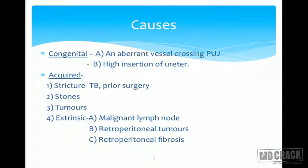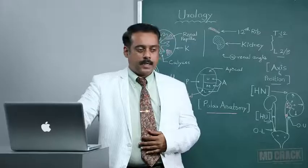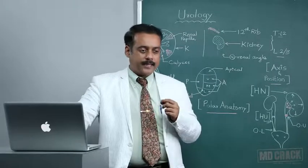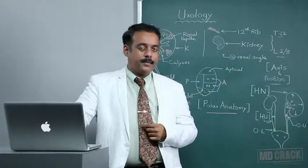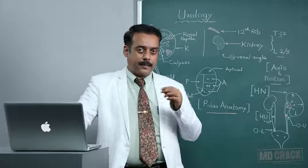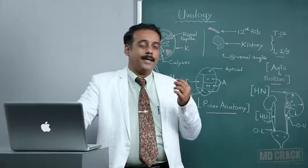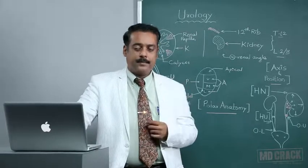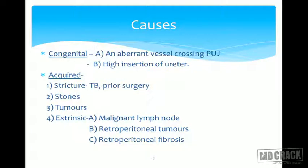What are the causes for hydronephrosis? It can be either congenital or acquired. Congenital causes include an aberrant vessel crossing the pelvic ureteric junction. As we have already seen in the anatomy, sometimes there can be an aberrant renal artery that crosses at the pelvic ureteric junction, causing compression at the PUJ, eventually leading to dilatation of the pelvicalyceal system. Second is high insertion of the ureter, which can lead to reflux and back pressure changes, hence hydronephrosis.